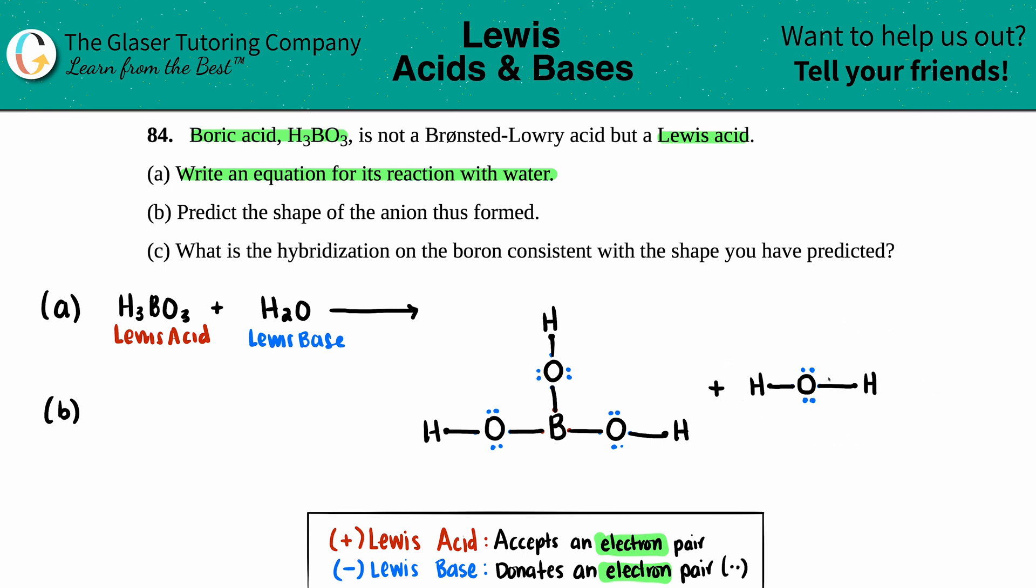This is the Lewis base. It has a lone pair—that's the kickoff. The base always donates that lone pair. These electrons will go right into the boron because boron can have four bonds. Neutral it wants three, but these lone pairs say you can have another bond.